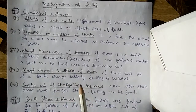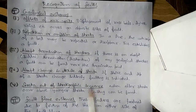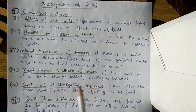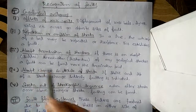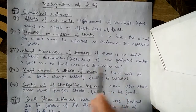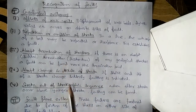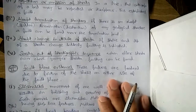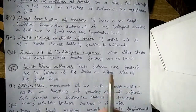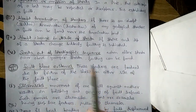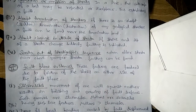Abrupt termination means if a structure is suddenly destroyed, a fault can be found near that termination point. The fourth evidence is abrupt change in attitude of strata — attitude refers to its orientation, shape, and size. If the strike and dip of strata change suddenly, faulting is indicated.